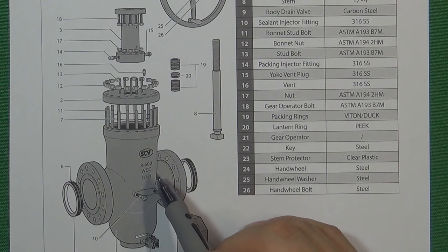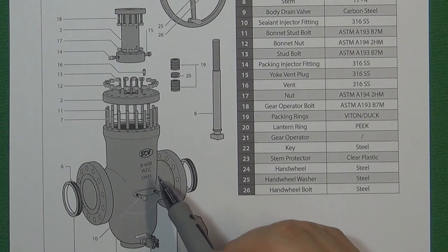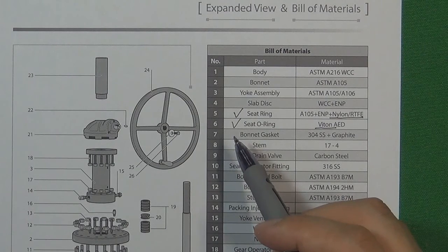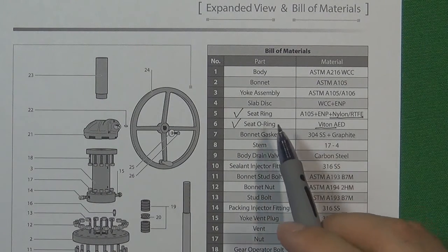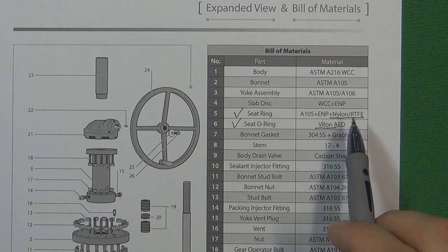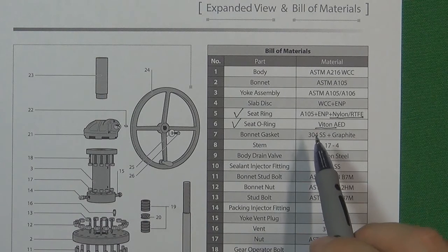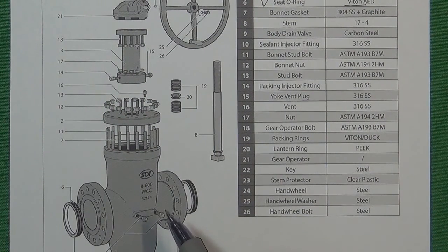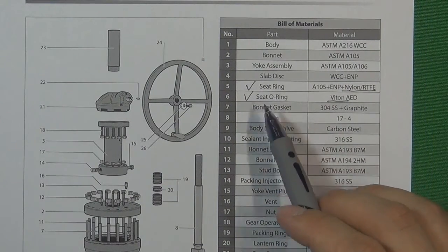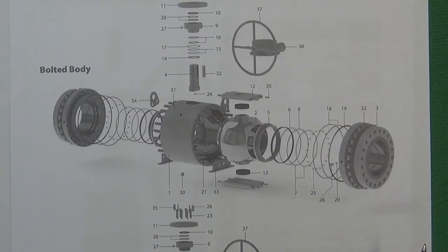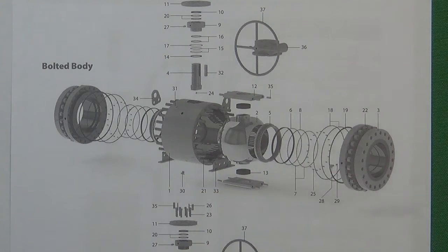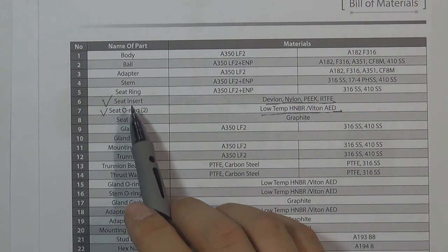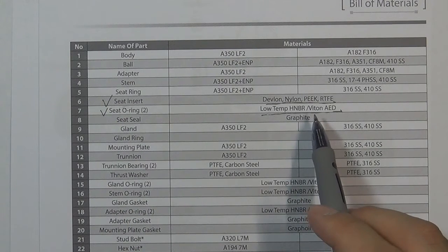When we talk about material — for example, WCB cast on the valve body — you might think this valve can work in a high temperature environment like 425°C or 1200°F. But actually it cannot. In API 6D, many internal components are made of soft materials, like the seat ring and seat O-ring in the slab gate valve, which are made of RTFE and Viton. These materials cannot work above 225°C. High temperature would totally destroy the seat ring and O-ring. The same applies to ball valves, which also contain soft material seat inserts and O-rings.